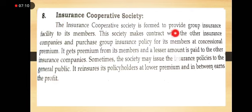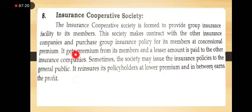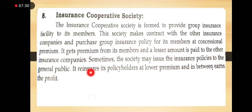The insurance cooperative society makes contracts with insurance companies and purchases group insurance policies for its members at a consensual premium. It collects premiums from members and pays a lump sum amount to the insurance companies. Sometimes the society may also issue insurance policies to the general public, re-insuring policyholders and earning profit in the process.